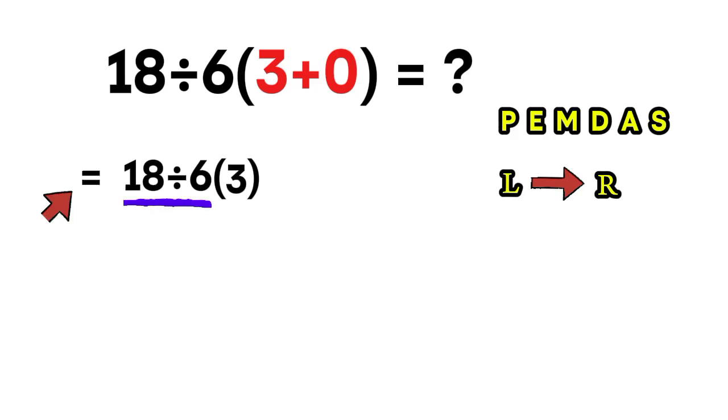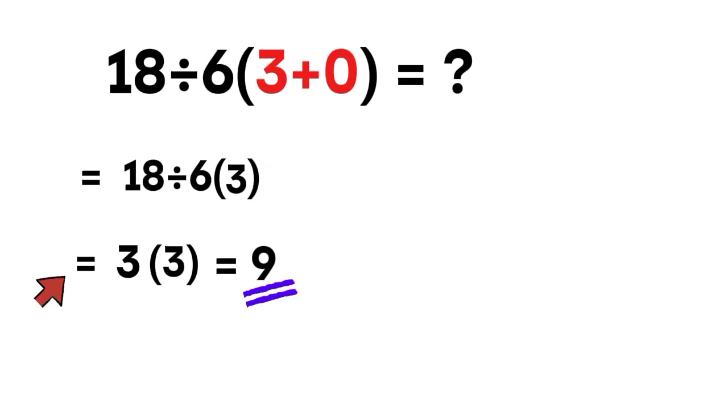First operation: 18 divided by 6 equals 3. Now we only have 3 times 3, which is 9, and that is the correct answer. The final result is 9.